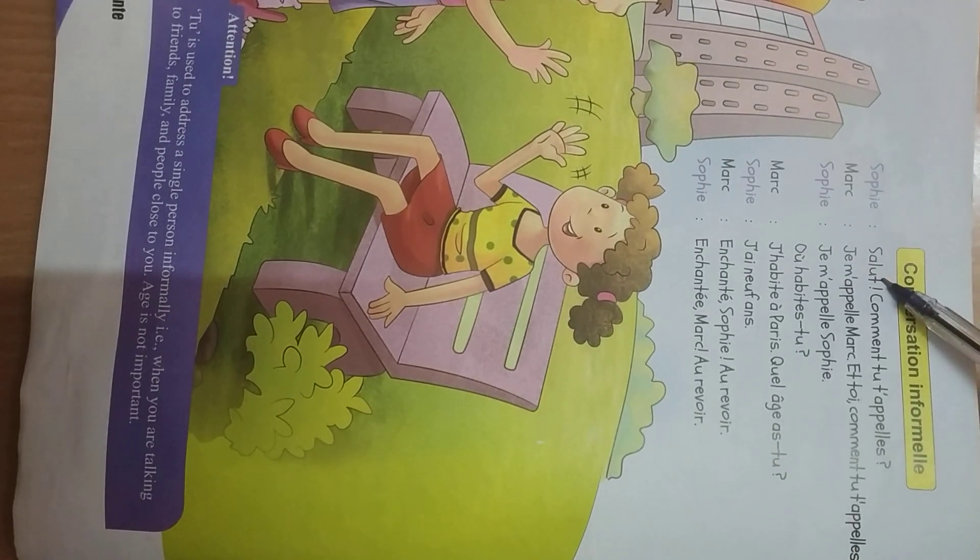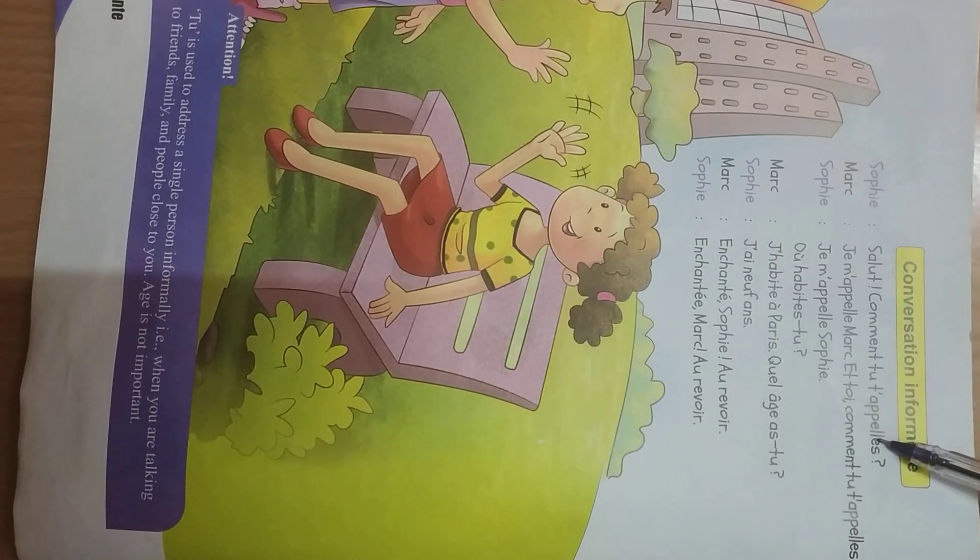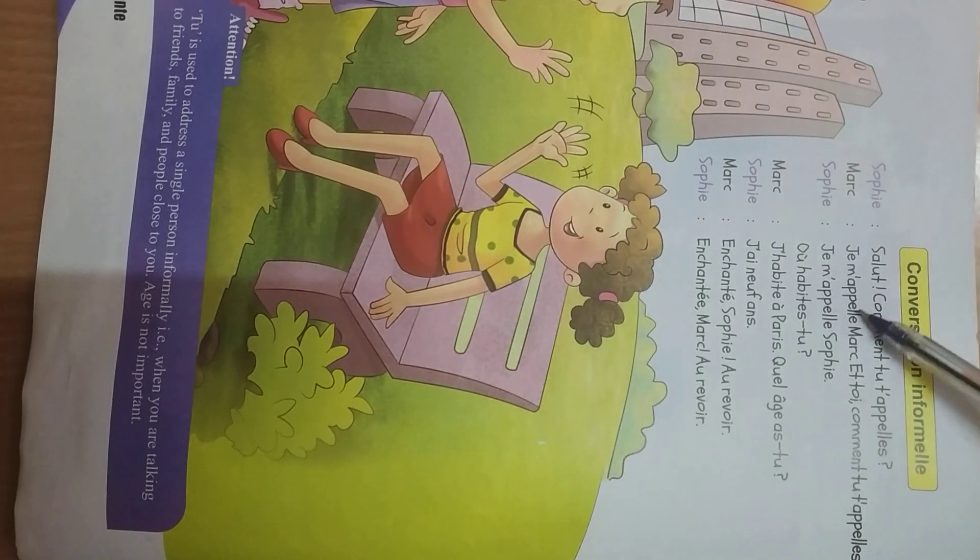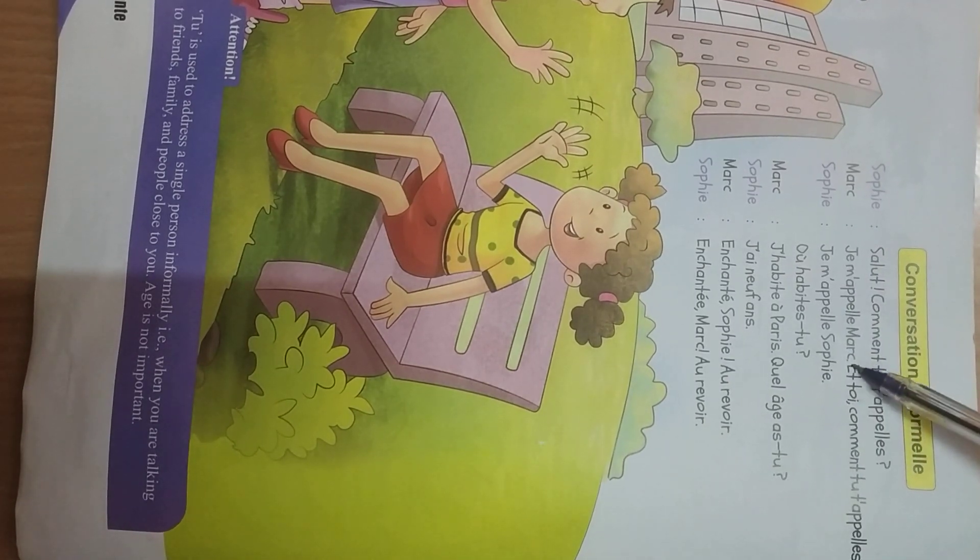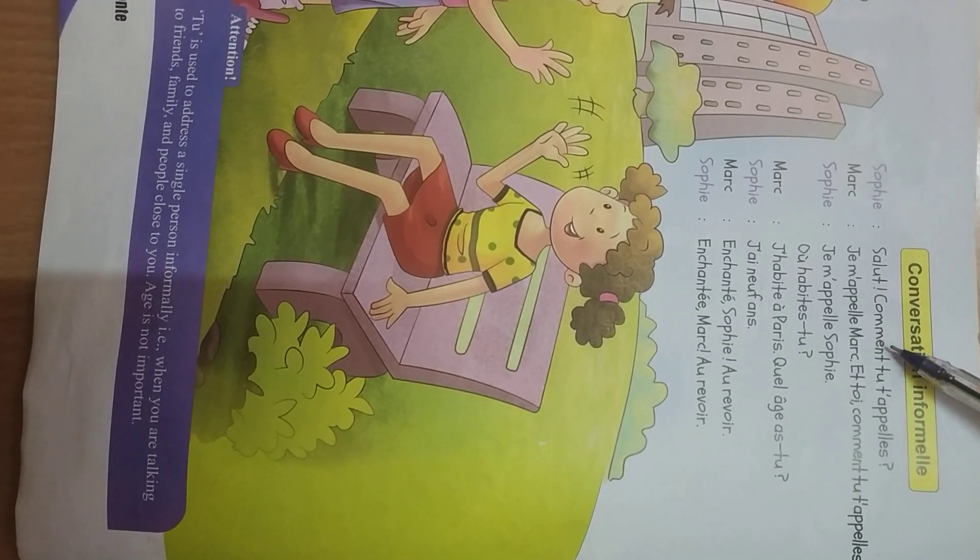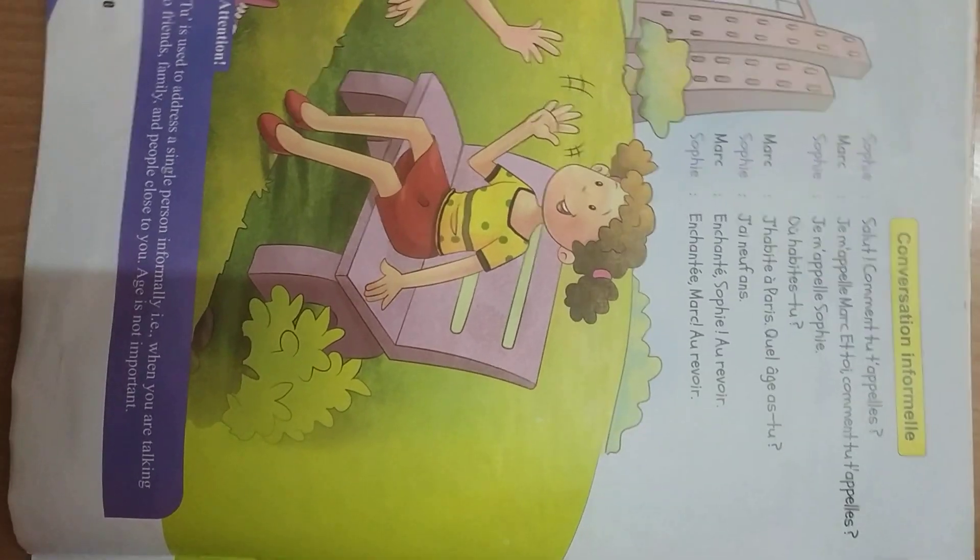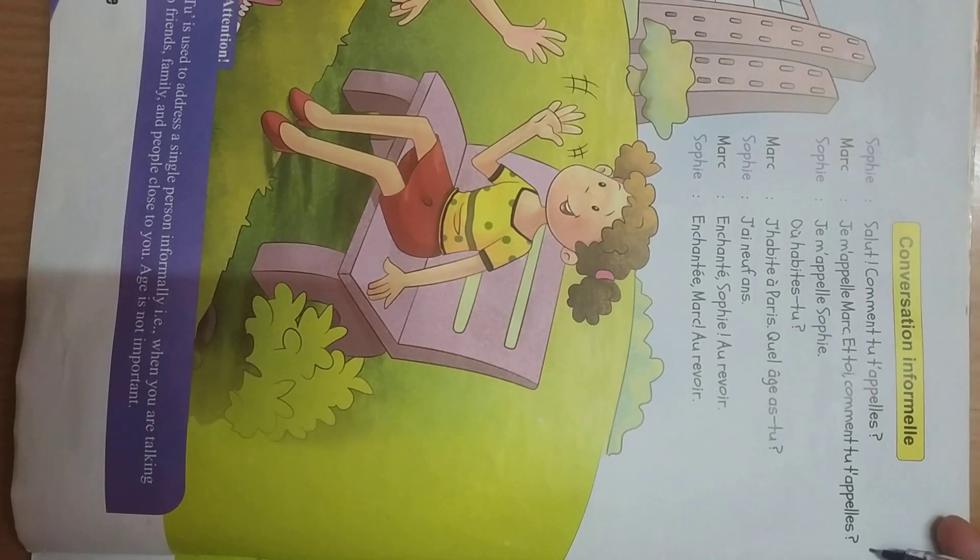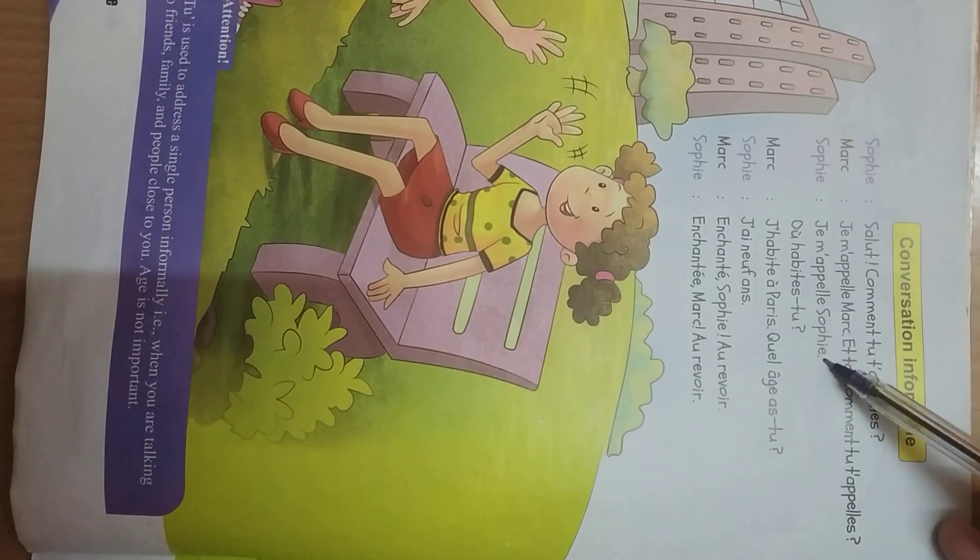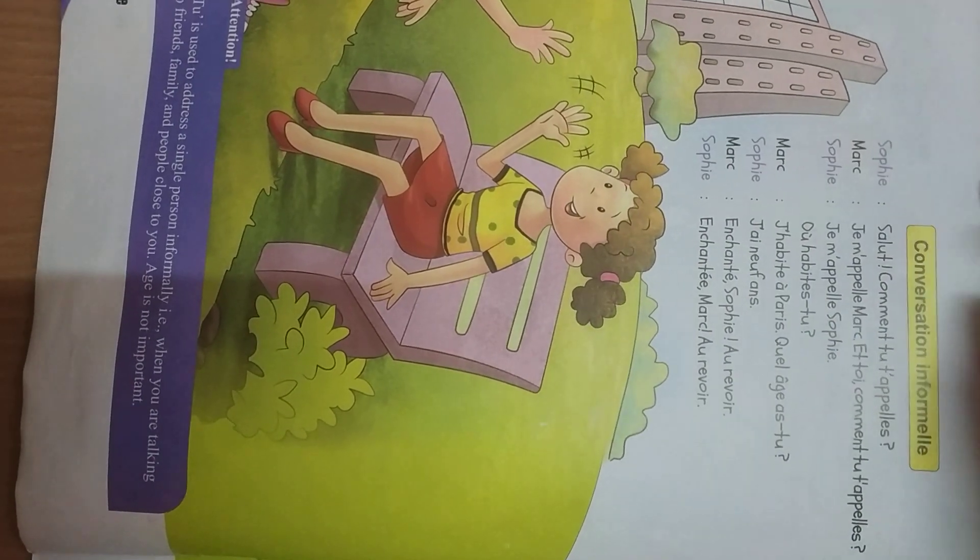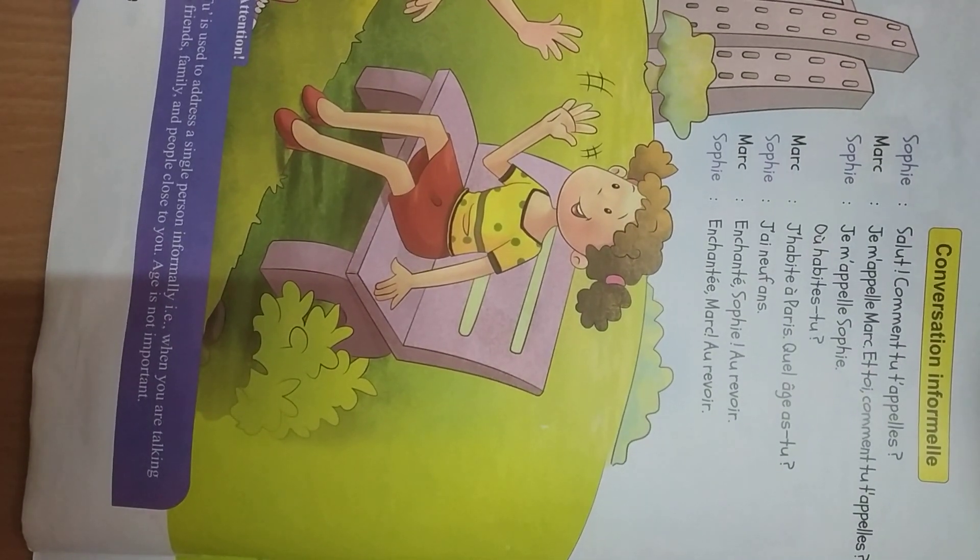The first is, salut. Hi. Comment tu t'appelles? What is your name? Je m'appelle Marc. My name is Marc. Et toi? Et toi means and you. That means the same question you are asking to the other person. Comment tu t'appelles? Again, what is your name? Je m'appelle Sophie. Now Sophie is answering the question. That is, my name is Sophie.